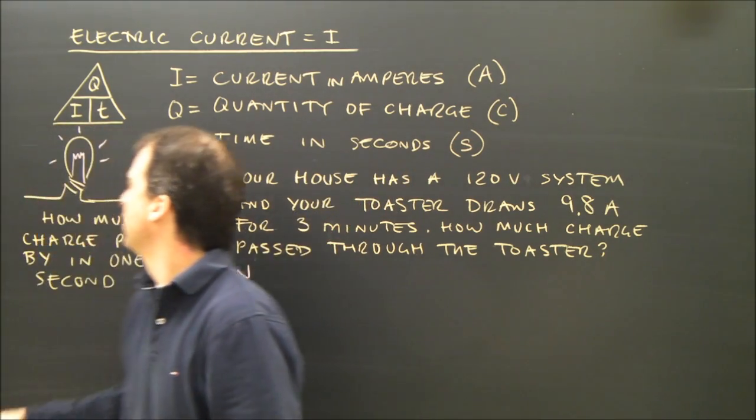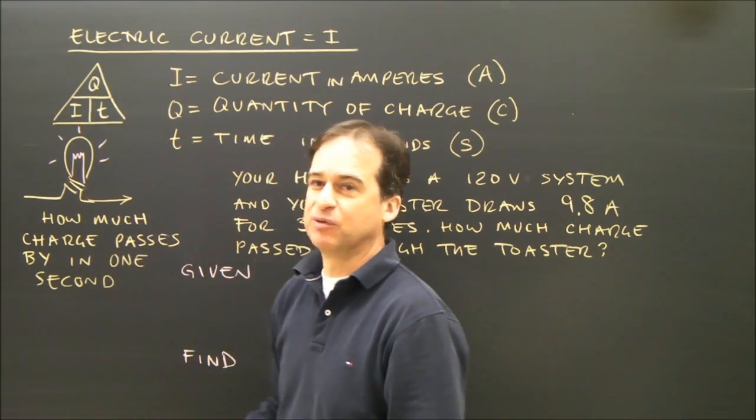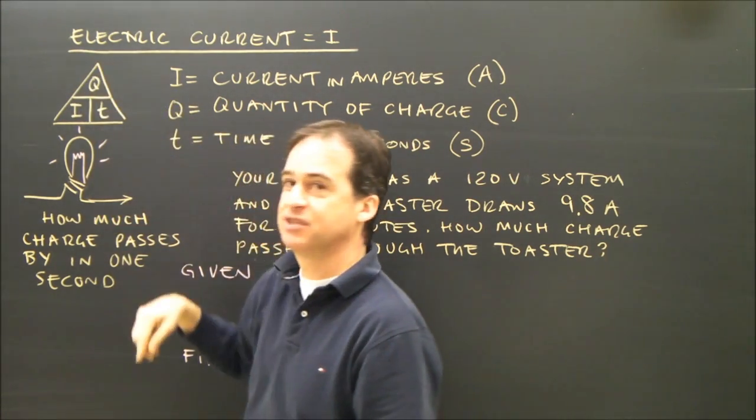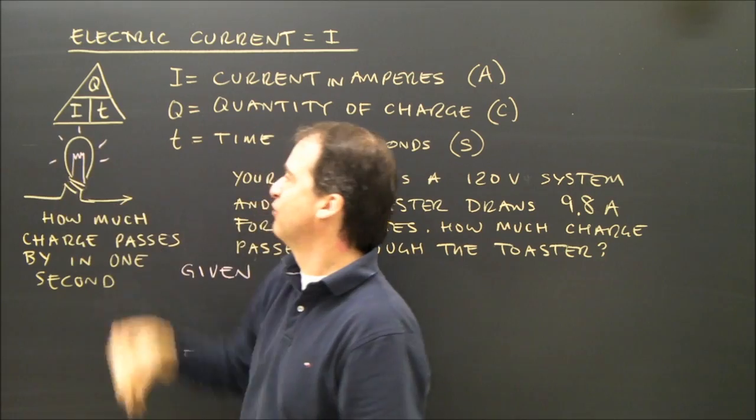Can't use minutes or hours. So I have my triangle here, which relates the formula. I is Q divided by T. Q is I times T. And T is Q divided by I.